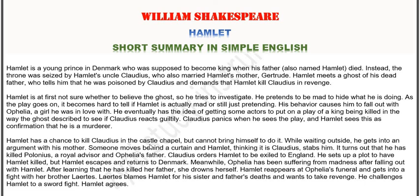Hamlet has a chance to kill Claudius in the castle chapel but cannot bring himself to do it. While waiting outside, he gets into an argument with his mother. Someone moves behind a curtain and Hamlet, thinking it is Claudius, stabs him. It turns out he has killed Polonius, a royal advisor and Ophelia's father.